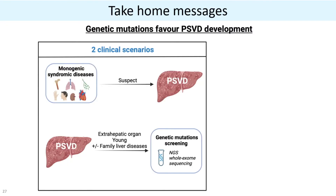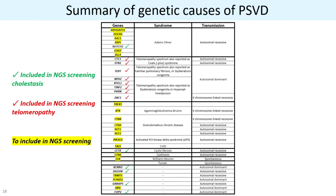Some take-home messages: genetic mutations favor PSVD development and we have two clinical scenarios. First, patients with monogenic syndrome disease — clinicians should suspect PSVD as a potential liver manifestation in the lifetime of these patients. Second, patients presenting symptomatic PSVD with extra-hepatic organ involvement who are young with or without liver disease — in this group we highly suggest that genetic mutation screening should be performed, starting at least with NGS and then whole exome sequencing. Here is a summary of the genetic causes described today: in green are those included in the cholestasis panel, in red are those for telomeropathy screening, and in yellow are those that could be included in the standard NGS panel in the hospital.